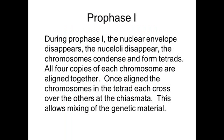In prophase one, many of the same things as mitosis occur: the nuclear envelope disappears, the nucleoli disappear, and chromosomes condense. However, this time instead of having two sister chromatids forming a chromosome, you have the two from dad and the two from mom forming a tetrad — tetra means four. All four of the same type of chromosome align side by side. Then crossing over occurs: the two middle chromatids flop their arms over each other, cut at a spot called the chiasma, and reattach so that the DNA is mixed up.